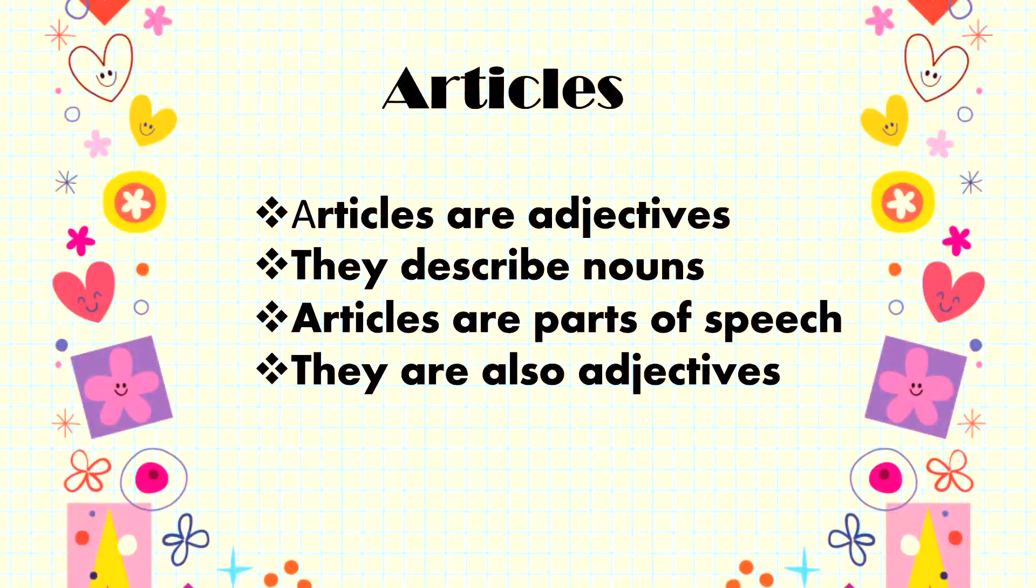Articles are usually adjectives. They describe the noun, as I have already told you before. Nouns are basically name, place, animals, or things. Before this, 'a', 'an', or 'the'—all of them come before the noun. Articles are parts of speech also. If we speak to your friends or teachers or parents, we use articles to speak.